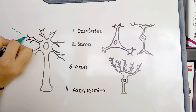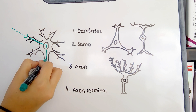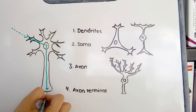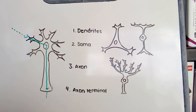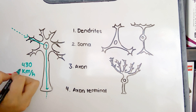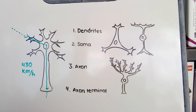Of all the cells in the body, neurons are arguably the most efficient at information processing, receiving and transmitting signals at 430 kilometers an hour. But what truly distinguishes nervous tissue is the remarkable connectedness of the cells, and the intricacies of their networks.